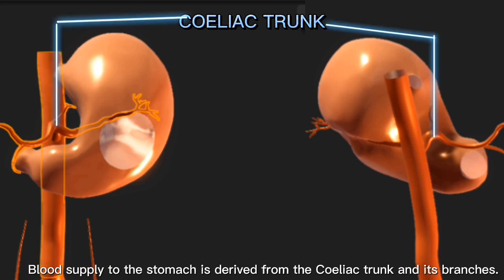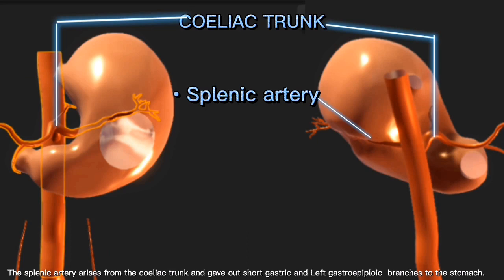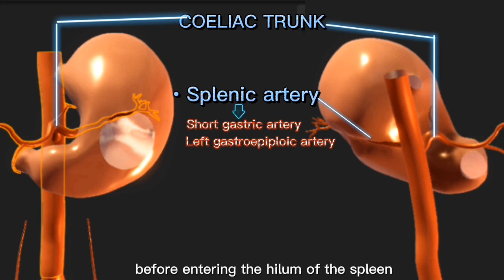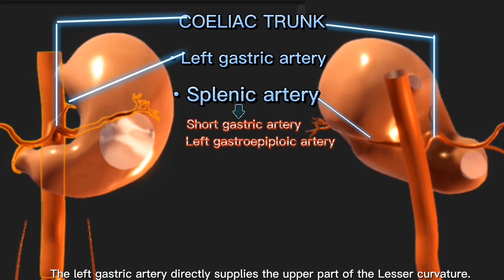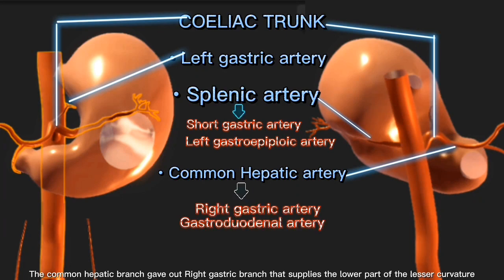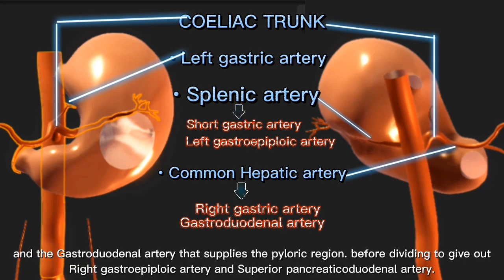Blood supply to the stomach is derived from the celiac trunk and its branches. The splenic artery rises from the celiac trunk and gives out short gastric and left gastroepiploic branches to the stomach before entering the hilum of the spleen. The left gastric artery directly supplies the upper part of the lesser curvature. The common hepatic branch gives out the right gastric branch supplying the lower part of the lesser curvature, and the gastroduodenal artery supplying the pyloric region, before dividing to give the right gastroepiploic artery and the superior pancreaticoduodenal artery.